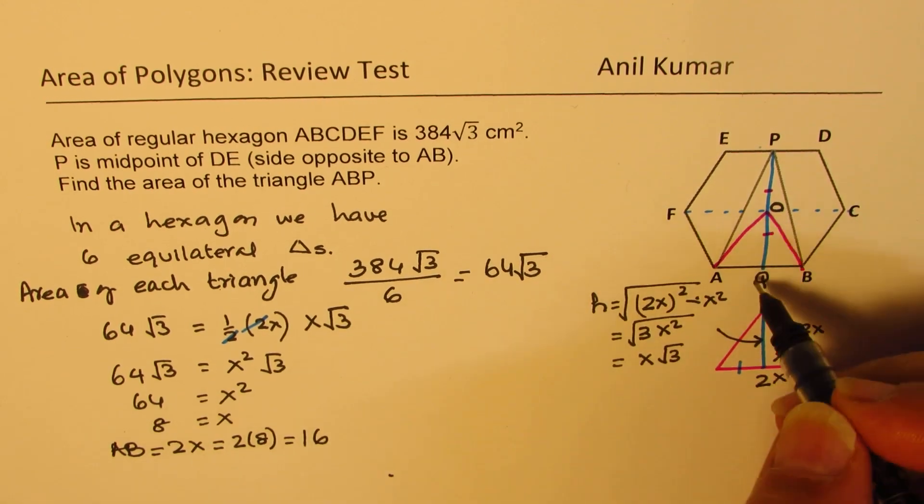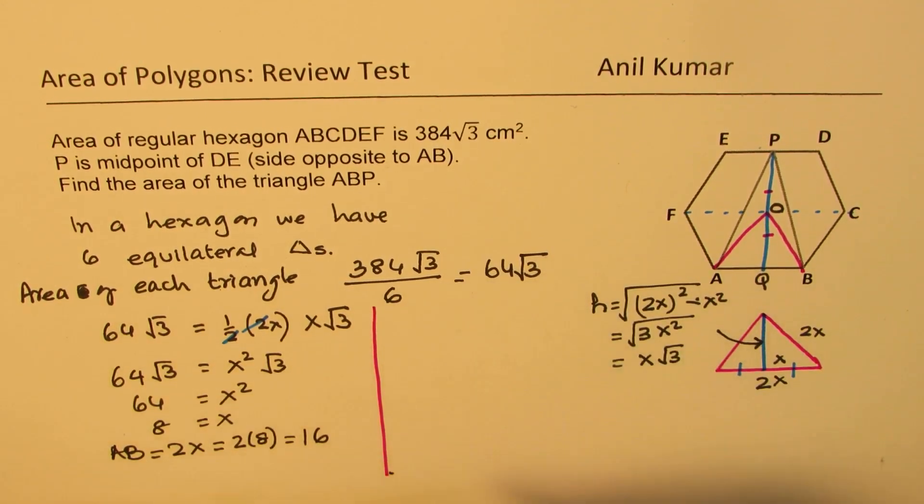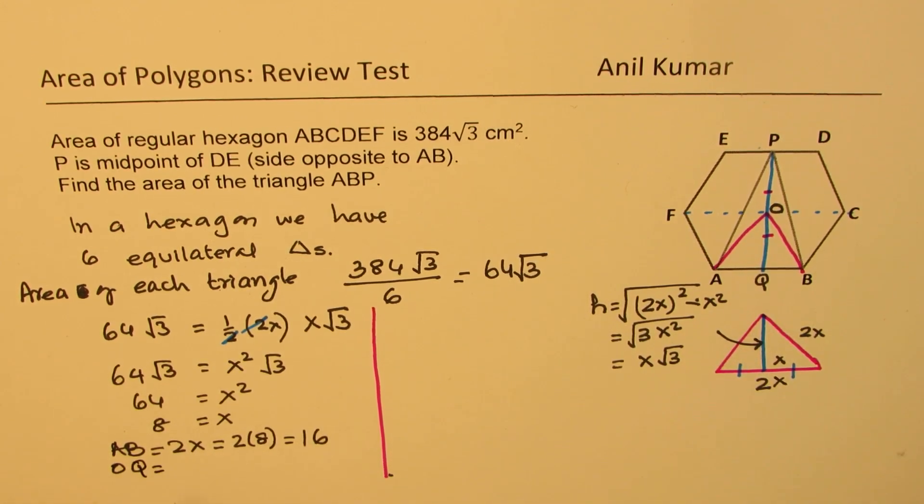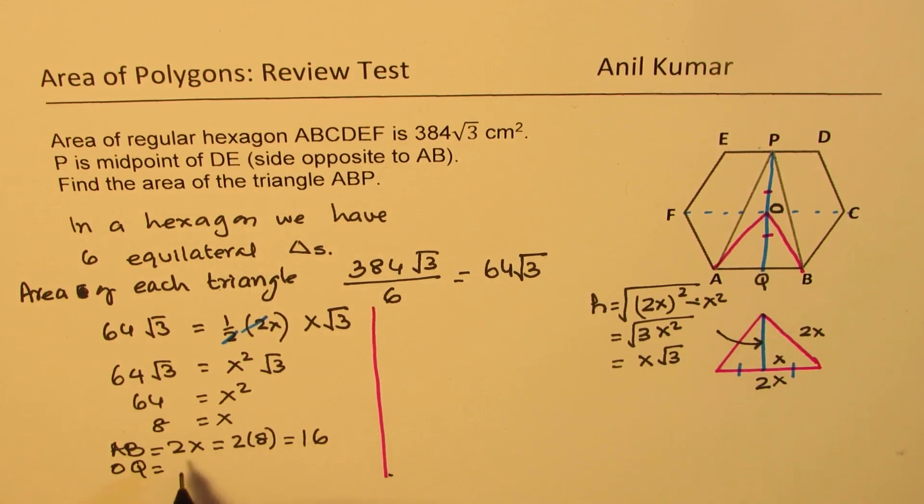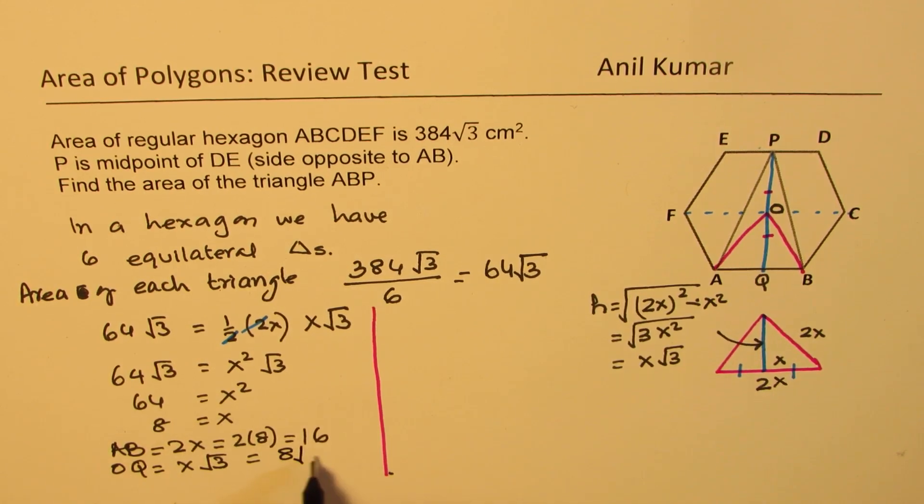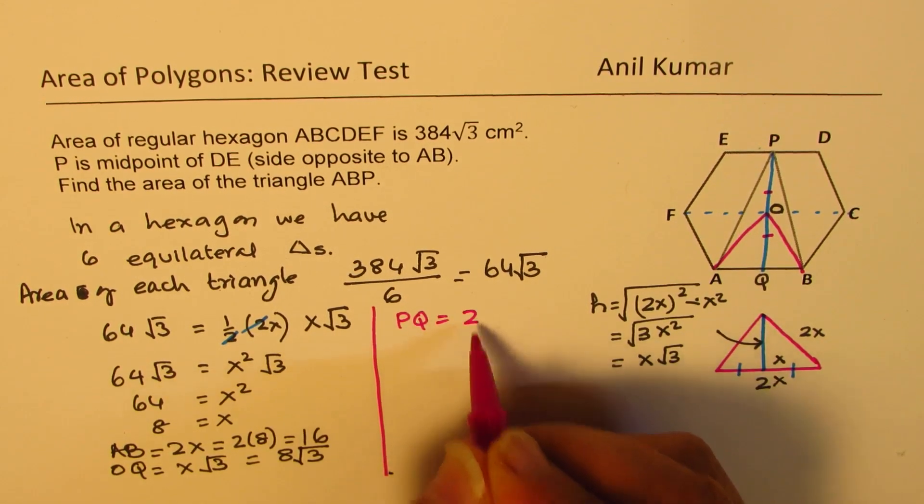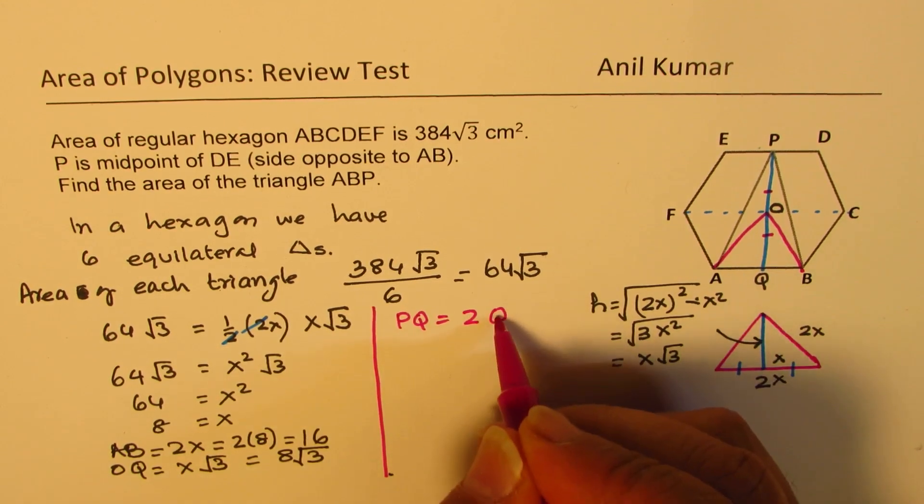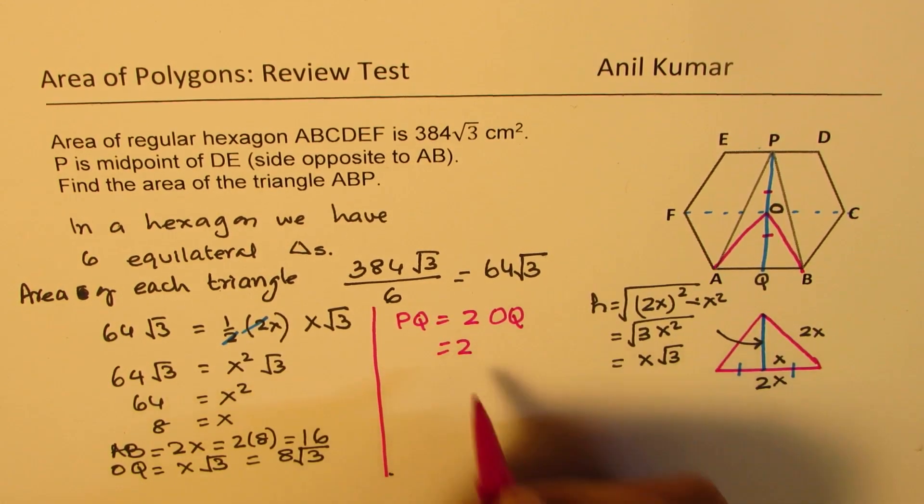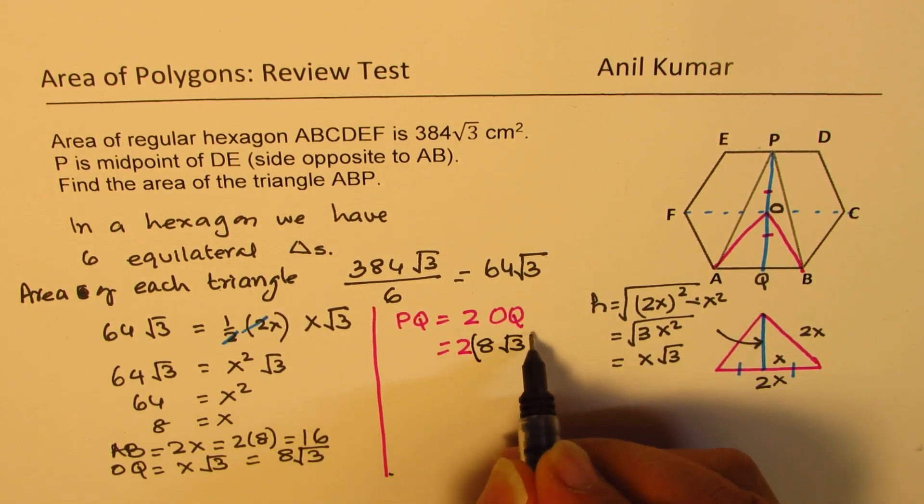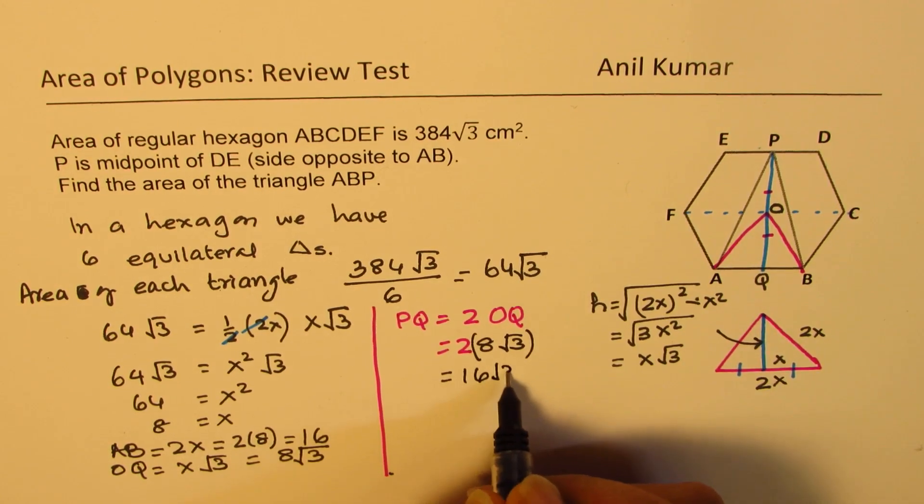What is OQ? Let's figure this out. OQ is basically x√3. x is 8, so that is 8√3. PQ will be how much? PQ will be twice OQ. That will be twice 8√3, which is 16√3.